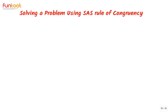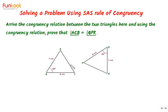We are aware of the SAS rule of congruency. Let's solve a problem based on the SAS rule of congruency. The problem is: derive the congruency relation between two triangles and, using the congruency relation, prove a given angle equality.